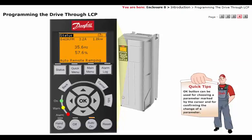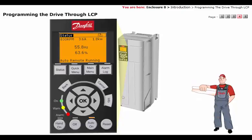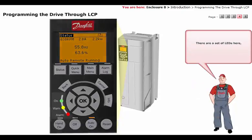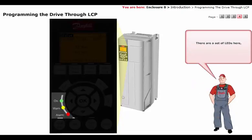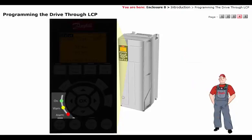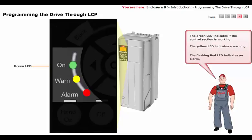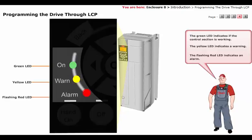The OK button can be used for choosing a parameter marked by the cursor and for confirming the change of a parameter. There are a set of LEDs here. The green LED indicates if the control section is working. The yellow LED indicates a warning. The flashing red LED indicates an alarm.